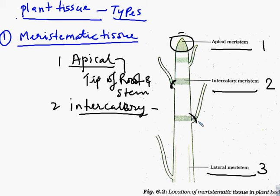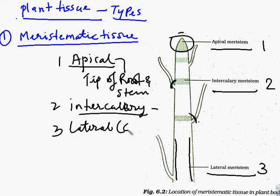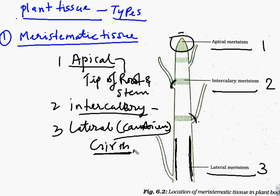The third type of meristematic tissue is lateral meristem, also called cambium. It is found in old stems. Lateral meristem is responsible for increasing the girth — the volume — of the stem. So the first plant tissue, meristematic tissue, has three parts: apical, intercalary, and lateral meristem. We have now studied their locations and functions.